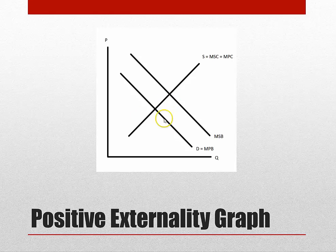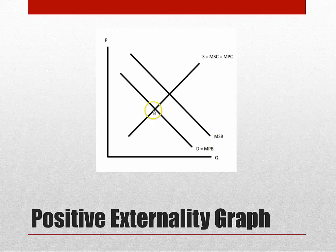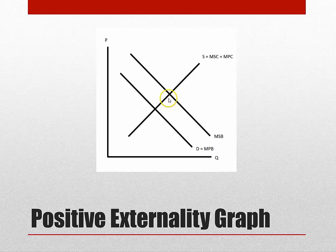This difference right here is called the externality, and this benefit is not captured by the price of the good. The firm would only produce at the point where its costs and benefits meet, because the firm only gets that much benefit. If the firm were to produce at the socially optimal level, it would actually lose benefit and operate at a loss. Therefore, the government must subsidize production.